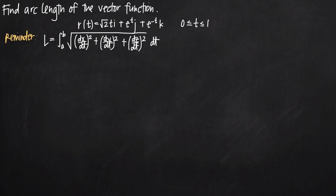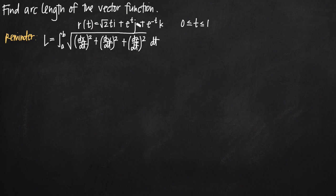Today we're going to be talking about how to find the arc length of a vector function. In this particular problem we've been given the vector function r of t equal to the square root of 2t times i, plus e to the t times j, plus e to the negative t times k, and t is defined on the closed interval 0 to 1.